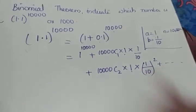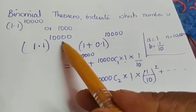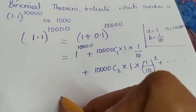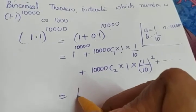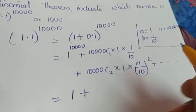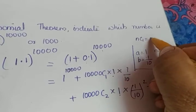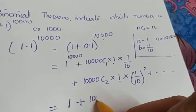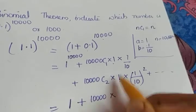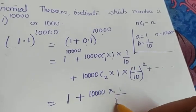We're not bothered about the terms. There will be 10,000 and 1 terms. 1 raised to 10,000 or 1 raised to any number gives you the value 1. We have a formula: nC1 is equal to n, so 10,000C1 will give you the value 10,000 into 1 into 1 by 10, which gives you 1 by 10.